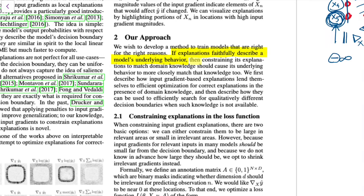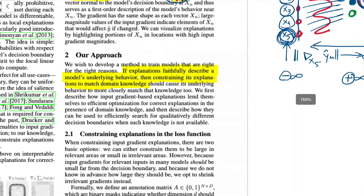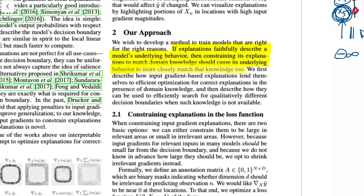They want to say: I'm telling the model that in these 100 images, these pixels are not important, and at some point the model should understand that. You annotate some inputs and hope the model learns that those annotated regions are irrelevant — this is their hypothesis. Now let's actually look at the method.